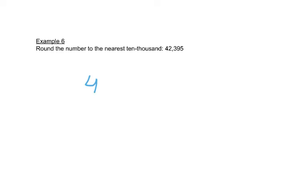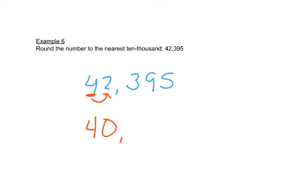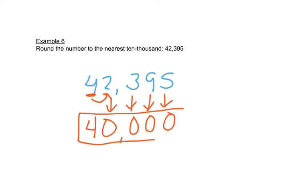Now let's look at forty-two thousand three hundred ninety-five, and we want to round to the ten thousands spot. We look at the number after it — that number is four or smaller, so the four stays the same. Everything after it gets replaced with a zero, so we have forty thousand. We're really asking: is this number closer to forty thousand or fifty thousand? The answer is forty thousand. That should allow you to do the homework in section 1.1.